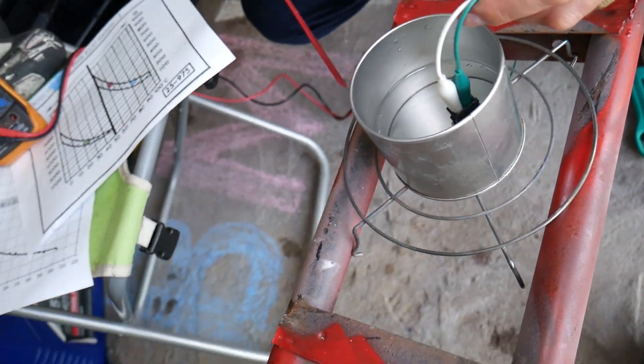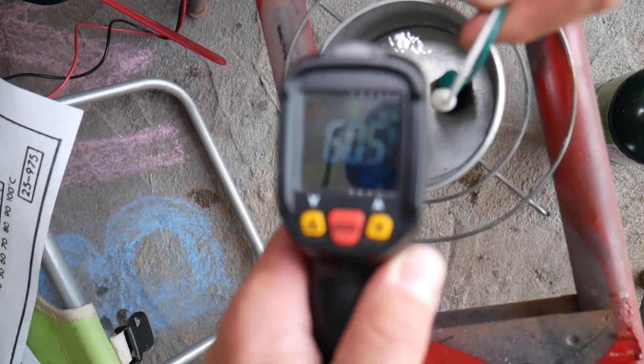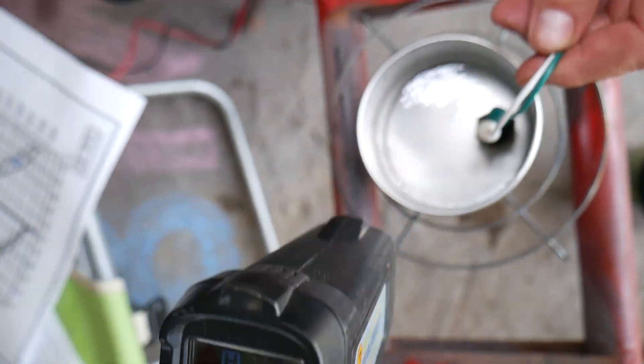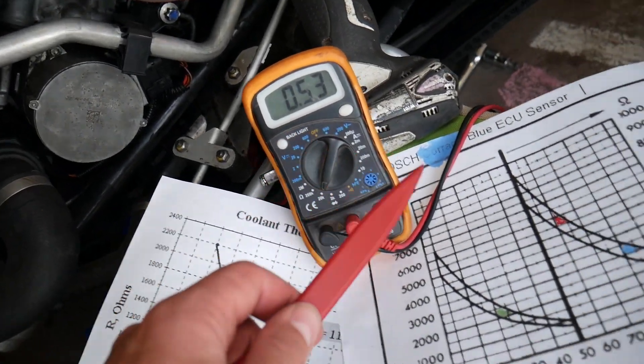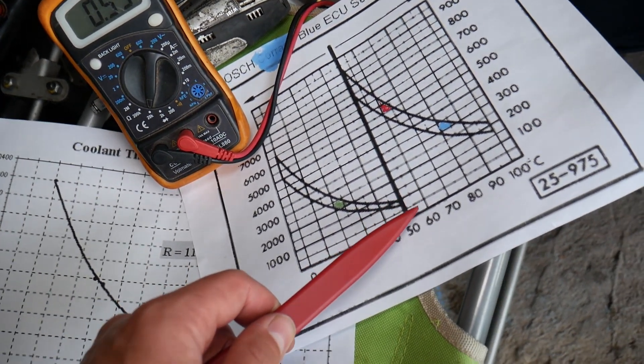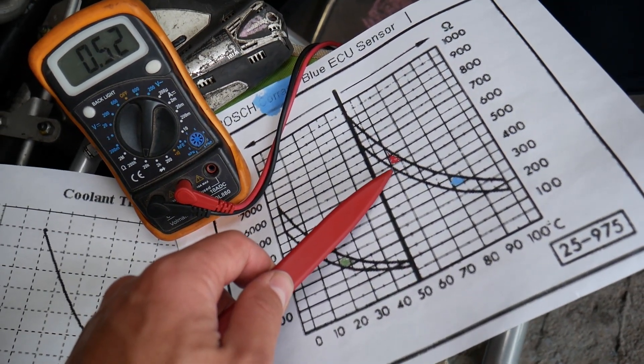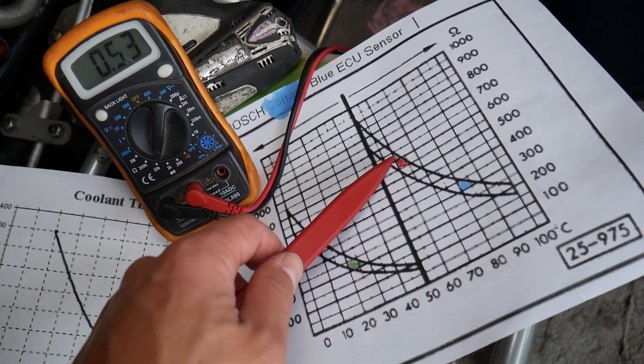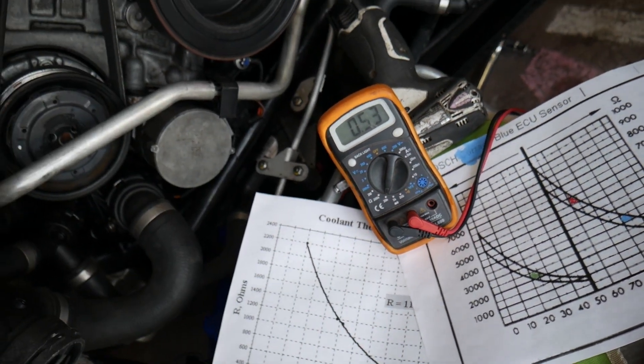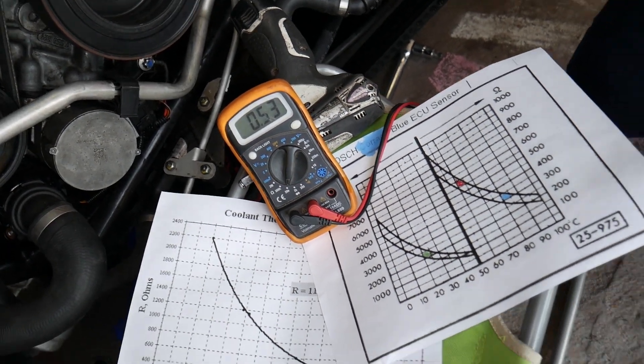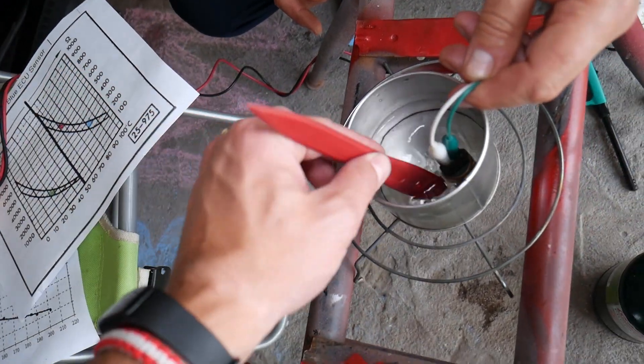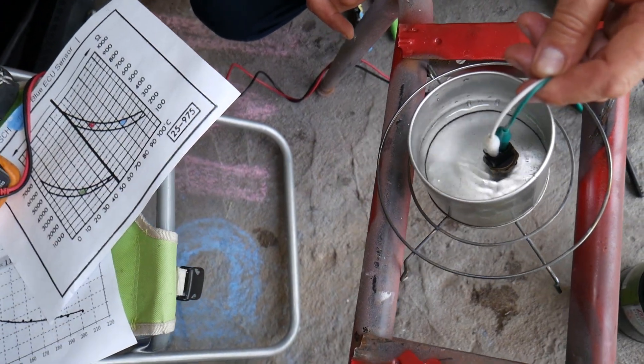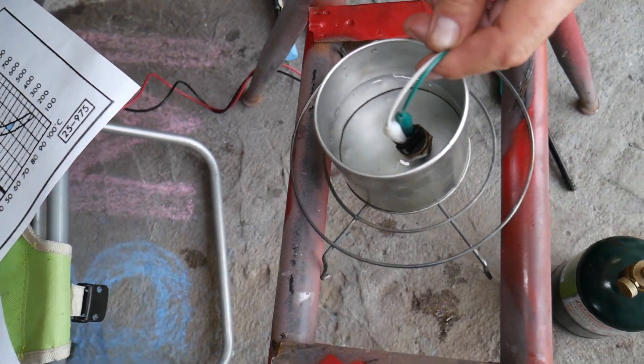So we have the water heated up. We're at about 60 degrees Celsius and right now we're at a 530 reading. If you come right here, we should be between 520 and about 620, so we're at 530 - right on the spot. Definitely a great working sensor so far, no problems at all.